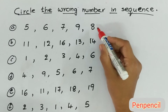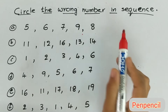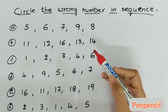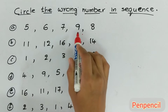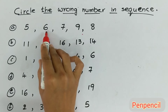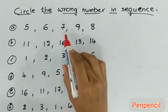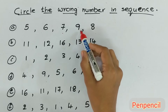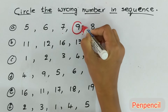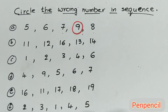Now we'll do this number sequence. What is the first one? 5, 6, 7, 9, 8 — what is the wrong one? Come on, tell me quickly. See, what should come after 5? 6 — correct. After 6? 7 — correct. After 7? 9 — no, wrong! 8 should come. So 9 is the wrong number. After 7, 8 should be there. This is the wrong number. This way you have to find out the wrong number in the series.